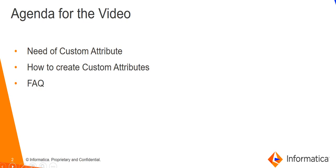Let's start with the first point: the need for custom attributes. By default, for each and every facet there are certain default fields. Using these fields you can provide information about a particular object of that facet. However, in some scenarios, depending on your organization's needs, you might want to save additional information for each object of a particular facet. The easiest way is to define an attribute at the facet level so it is present for every object, and hence we introduced the feature of custom attributes in Axon version 6.4.